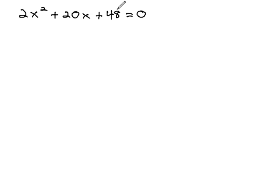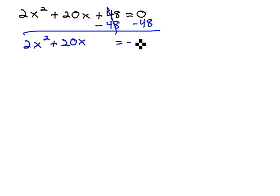We want all the variables on the left and this number 48 on the right. We can quickly do that by subtracting 48 from both sides. This gives us 2x squared plus 20x equals negative 48.